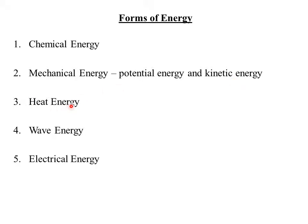The third form of energy is heat energy. Heat is a form of energy that flows from one region to another due to a temperature difference. For example, if one region has a temperature of 20 degrees Celsius and another has 10 degrees Celsius, heat will flow from the region of high temperature to the region of low temperature. When the temperature is the same at two points, there will be no heat energy flow. Heat energy is produced by burning fuels, electrical current, radiation from the sun, and also friction, among other sources.